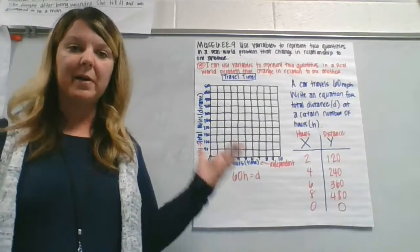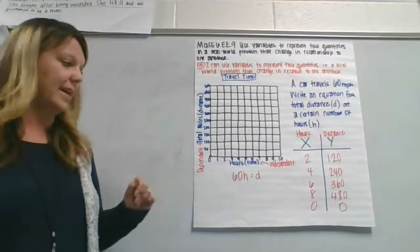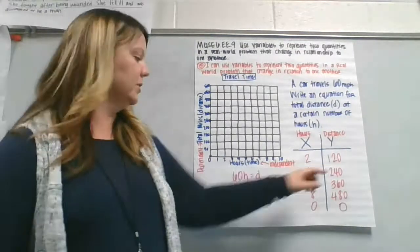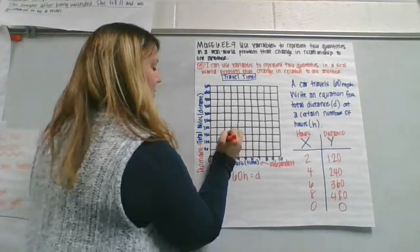your different values for X and Y, depending upon how long you're driving, you can plot those on the coordinate grid. So at two hours, going over two, we are at 120 miles, which is going to be right about here.